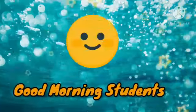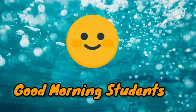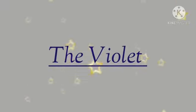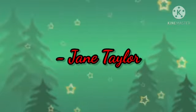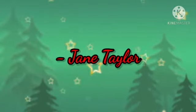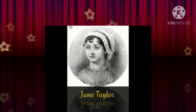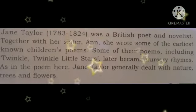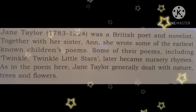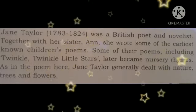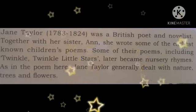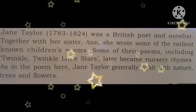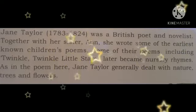Good morning students. Today we will learn the poem 'The Violet.' This poem was written by Jane Taylor, a British poet and novelist. Together with her sister Anne, she wrote some of the earliest known children's poems. Some of their poems, including 'Twinkle Twinkle Little Star,' later became nursery rhymes.